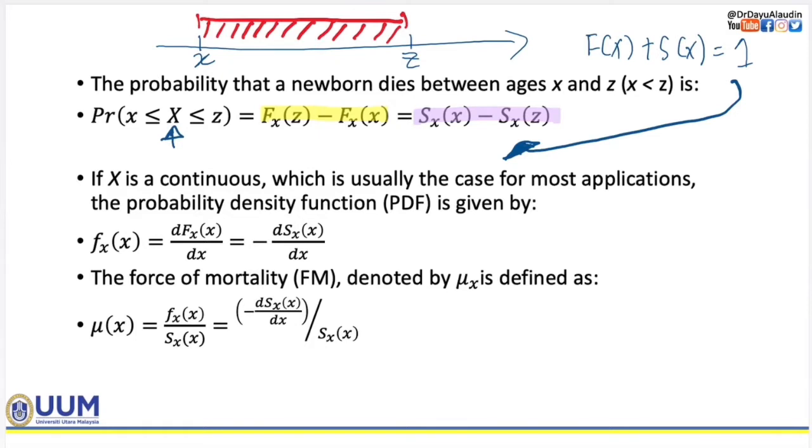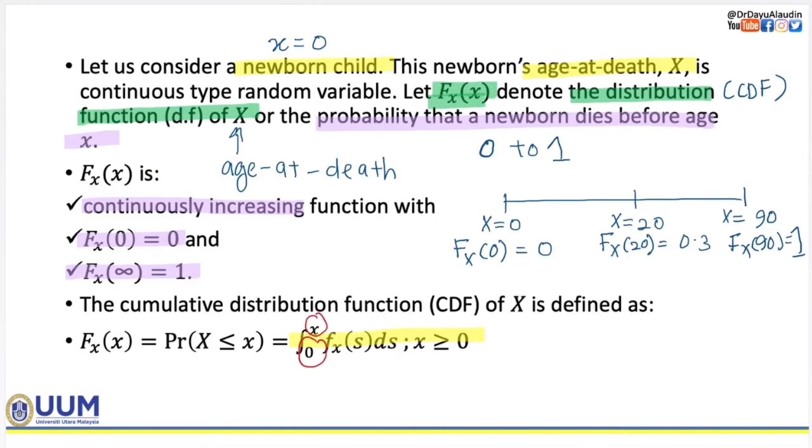If X is continuous, the PDF, the third notation, is given by the small f. First, probability of death, the notation is big F. Second one, survival distribution function is Sx. And the third one is PDF. In the previous slide, how to calculate the big F, we can integrate the small f. So from big F to small f, we have to integrate.